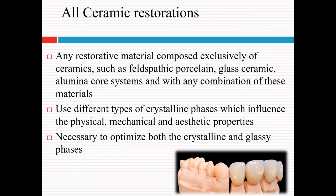All ceramic restorations are composed exclusively of ceramics such as feldspathic porcelain, glass ceramic, alumina core systems and any combination of these materials. Different types of crystalline phases influence the physical, mechanical and aesthetic properties. More glassy phase provides more translucency but weakens the structure by decreasing resistance to crack propagation. More crystalline phase improves mechanical properties but alters aesthetics. Therefore, it is necessary to optimize both crystalline and glassy phases to attain adequate mechanical and aesthetic properties. Numerous researchers have attempted reinforcing ceramics with various crystalline materials using innovative fabrication techniques to improve the shortcomings of all ceramic restorations.